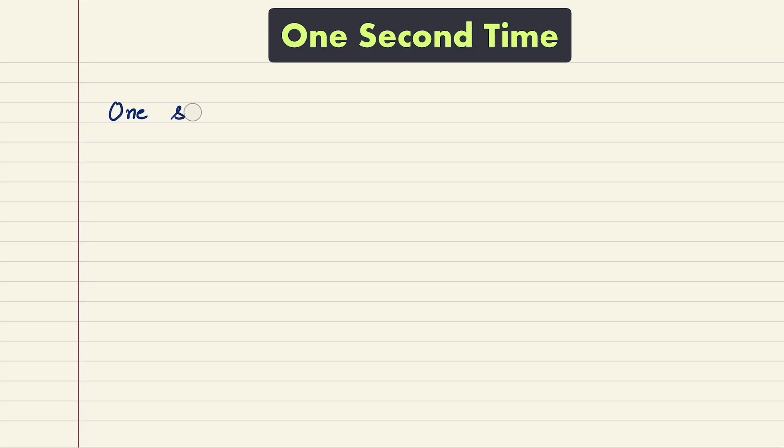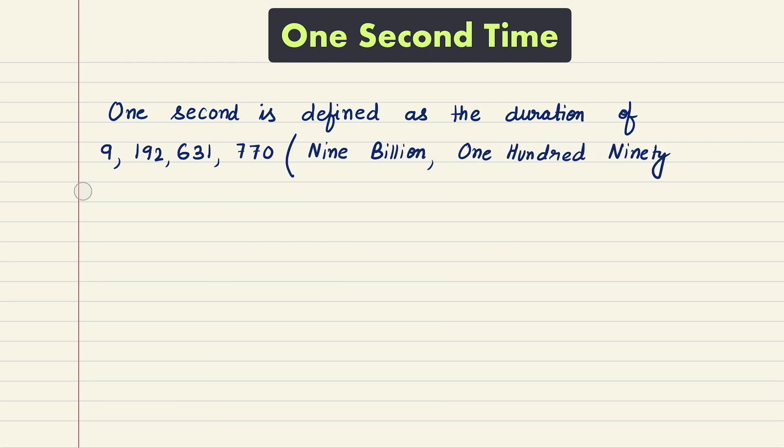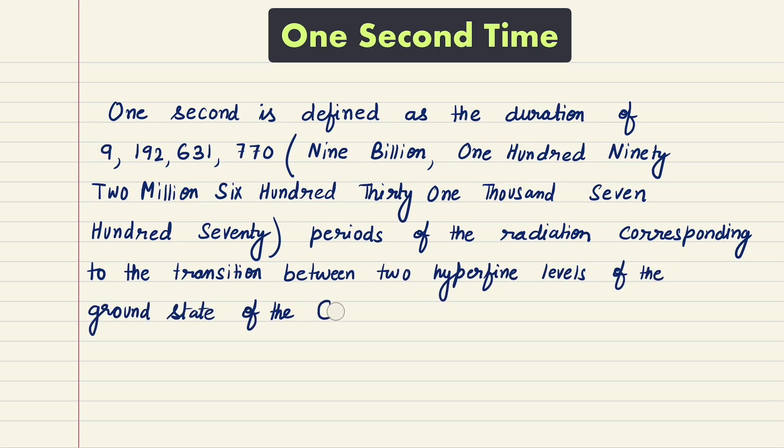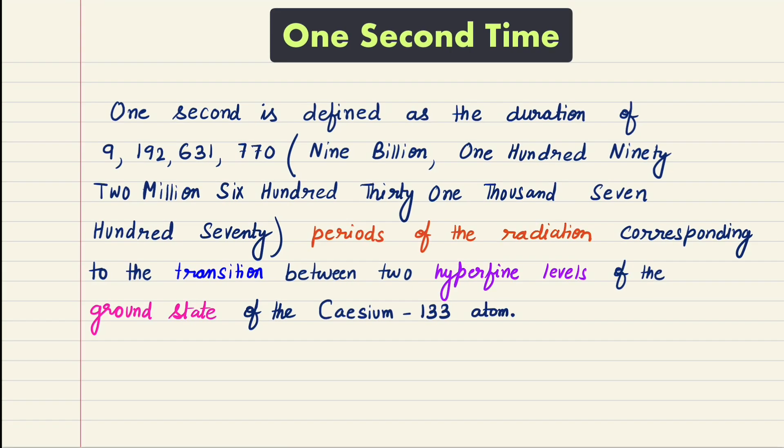One second is defined as the duration of 9,192,631,770 periods of the radiation corresponding to the transition between two hyperfine levels of the ground state of the cesium-133 atom. This definition is pretty wordy, and we need to break down the meaning of these terms in order to understand the definition better.